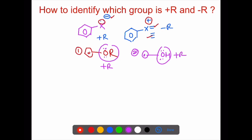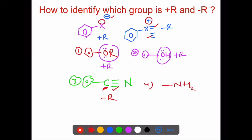Third example: cyanide (CN). There is a triple bond. First atom attached to benzene — checking: there is a triple bond, so the group is minus R. But the first atom here is nitrogen. Nitrogen has a lone pair, so this group's classification — lone pair gives plus R. So the group is plus R.